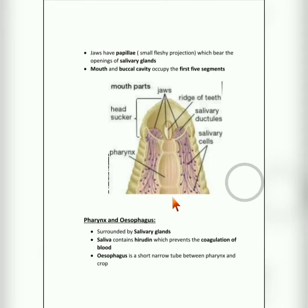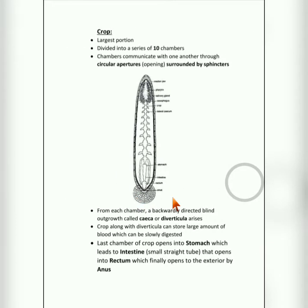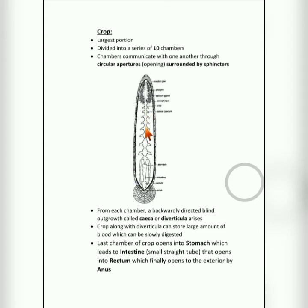Now we'll see about the crop, which is the largest part of the digestive system. The crop is divided into ten chambers. Each chamber communicates with the next through circular apertures — apertures means openings. These openings are protected by sphincter muscles, which regulate the passage and prevent backflow of food.